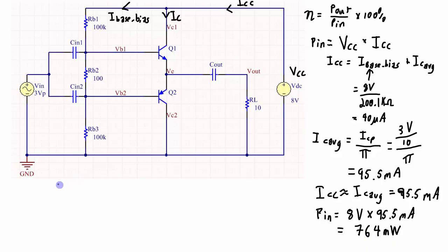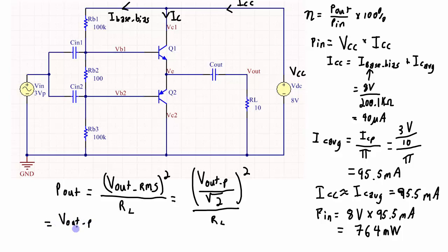The output power, the power dissipated across the 10 ohm load, is going to be whatever that output is in RMS squared divided by the load resistor. If we're doing this in terms of the peak voltage, that's going to be Vout peak over root 2 squared over RL. And I can simplify this and I get Vout peak squared over 2 RL.